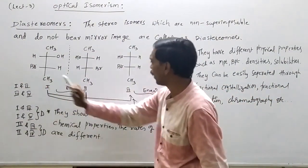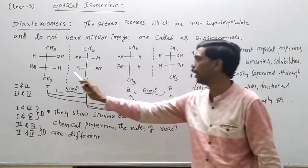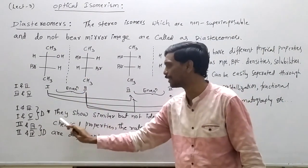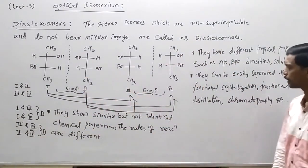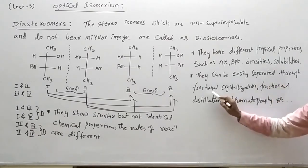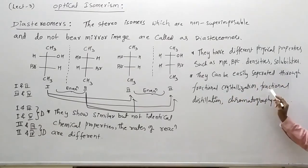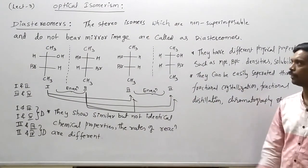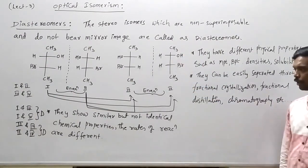First one's melting point or third one's melting point, all different, because these are diastereomeric pairs. And they can be easily separated through fractional crystallization, fractional distillation, and chromatography like techniques. This is about diastereomeric pairs.